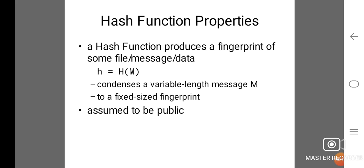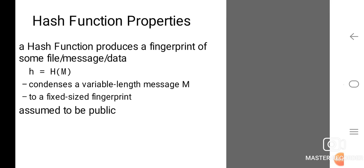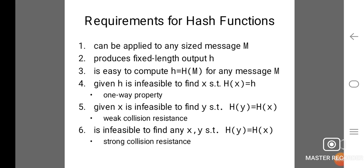A hash function produces a fingerprint of some file, message, or data: h = H(M). It condenses the variable-length message M to a fixed-sized fingerprint, assumed to be public. Requirements: it can be applied to any sized message M; produces fixed-length output h; is easy to compute H(M) for any message M; given h it is infeasible to find x such that H(x) = h (one-way property); given x it is infeasible to find y such that H(y) = H(x) (weak collision resistance); and it is infeasible to find any x, y such that H(y) = H(x) (strong collision resistance).